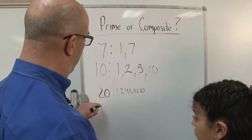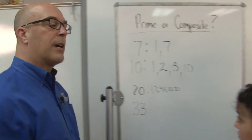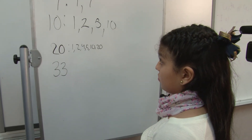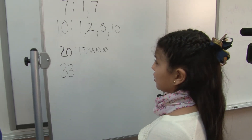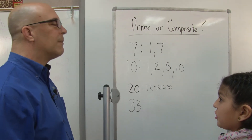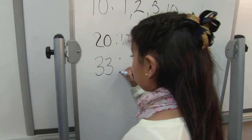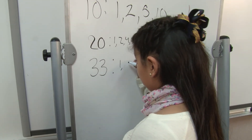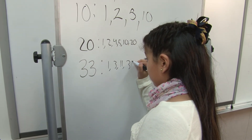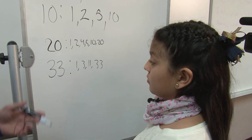Let's go with 33. You think that's prime or composite? Composite. That one took a little bit. Why do you think it's composite? Because 11 times 3 is 33. So why don't you go ahead and write down the factors of 33. Good. There are no other factors, so you did pretty well on that, knowing that it was 3 times 11.